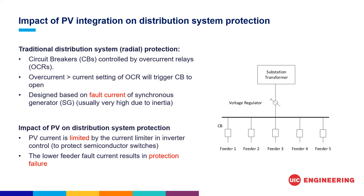However, the PV current is limited by the current limiter in the inverter control, which is used to protect the semiconductor switches of the inverter. This lower fault current on the feeder usually cannot be detected by the overcurrent relay, and thus results in protection failure.